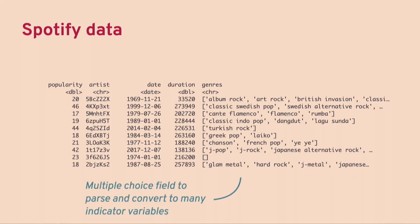We think genres are probably important to predict popularity, so we'd have to deal with this data somehow — find all the genres in the data and figure out how to encode them into our model matrix in a way that makes sense.